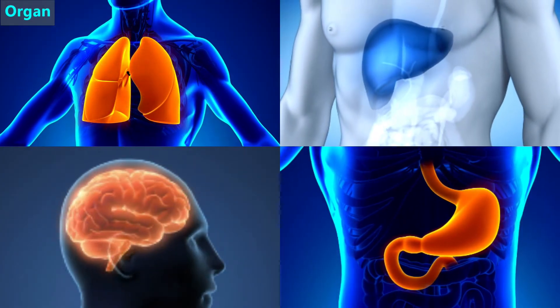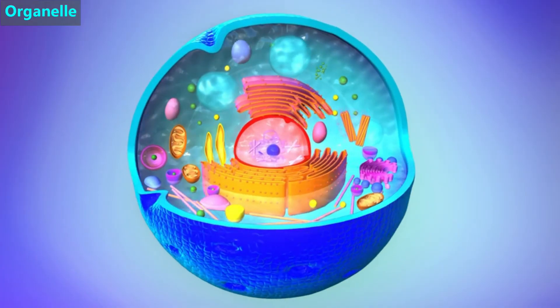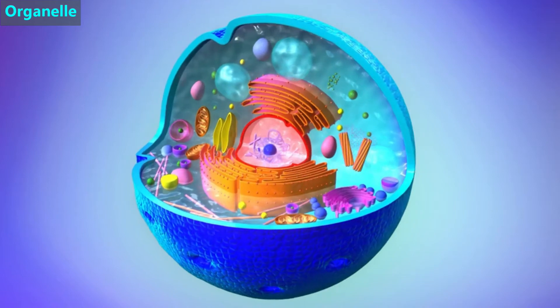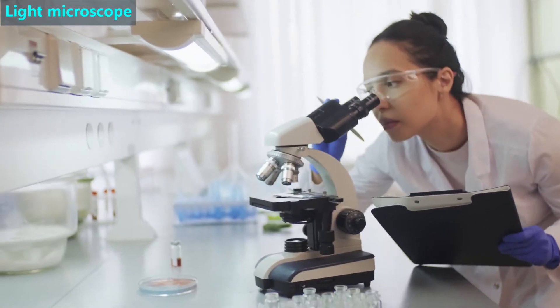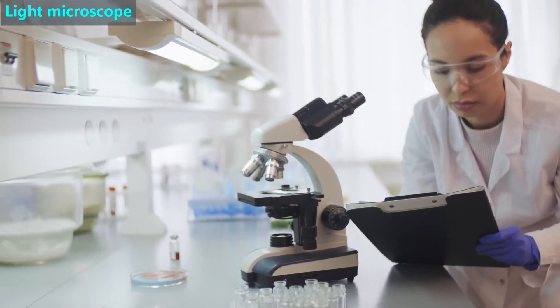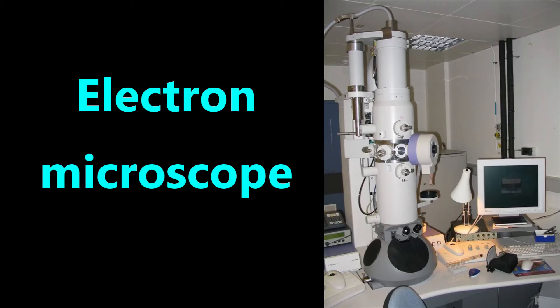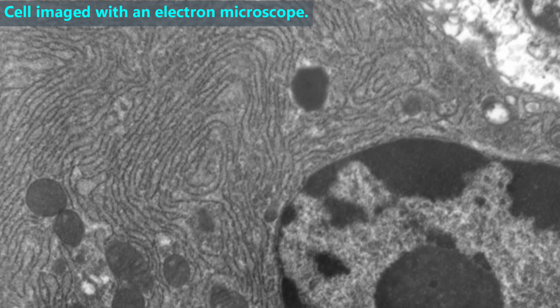The lungs, liver, brain, and stomach are four different organs. An organelle is a special object inside a cell, such as those in color in this animation. We can use light microscopes like this one to see cells move and to see some of their organelles. But to see greater details inside a cell, we use a much bigger instrument called an electron microscope. An electron microscope can produce images like this that show the insides of organelles.